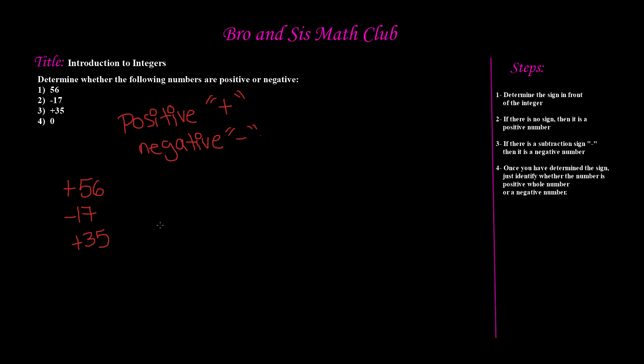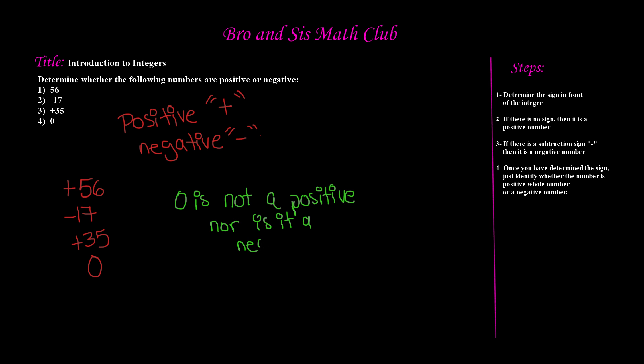Our last example is zero. Remember this rule always whenever you're dealing with integers: zero is not a positive number, nor is it a negative. Zero is not a positive, it's not a negative — it is still an integer, however it is not a positive or a negative number. Most likely you will not see zero given as an example to determine positive or negative, because it's obvious. But if you do find yourself in this situation, you could just write: zero is not a positive, nor is it a negative number.